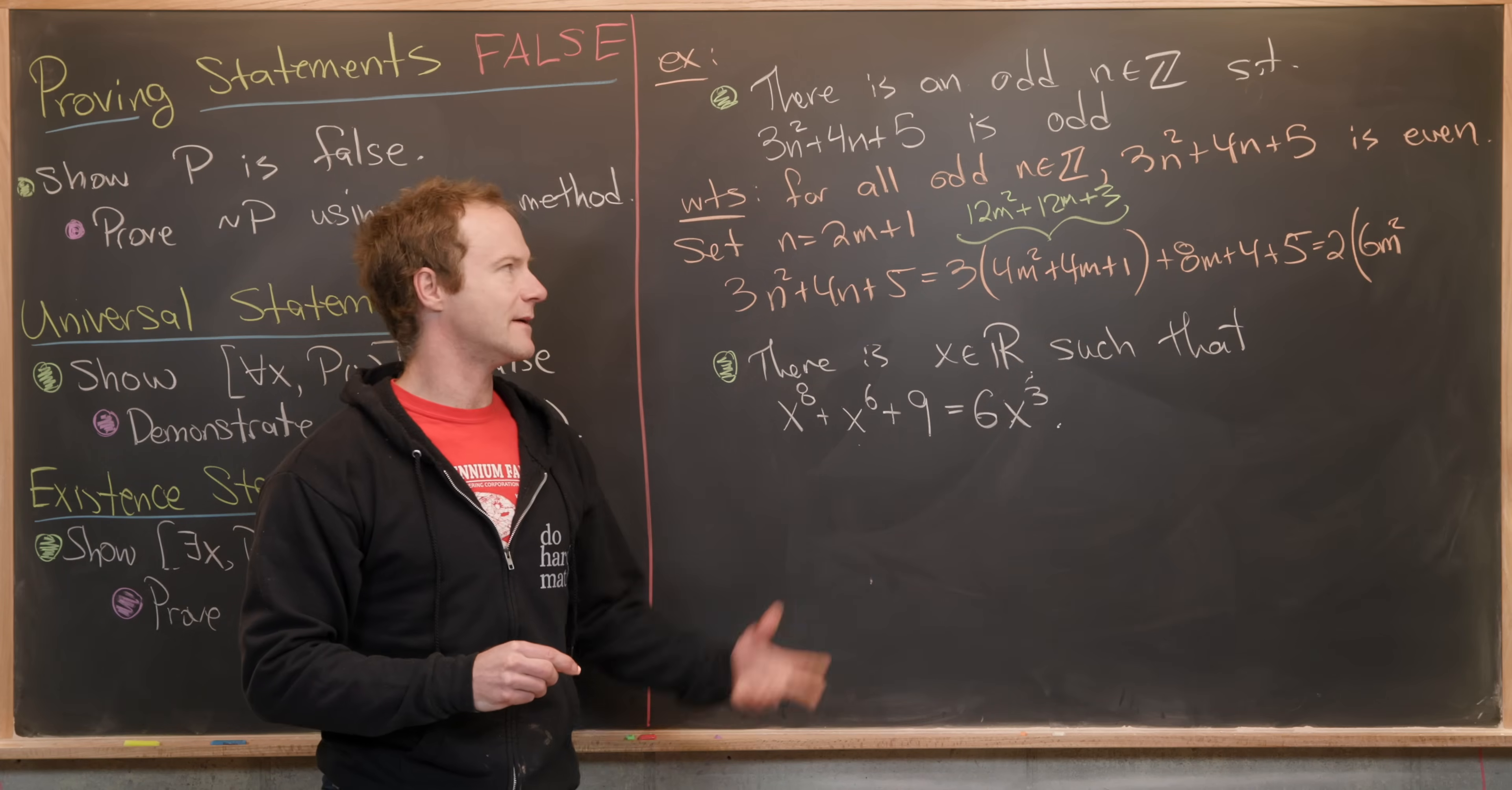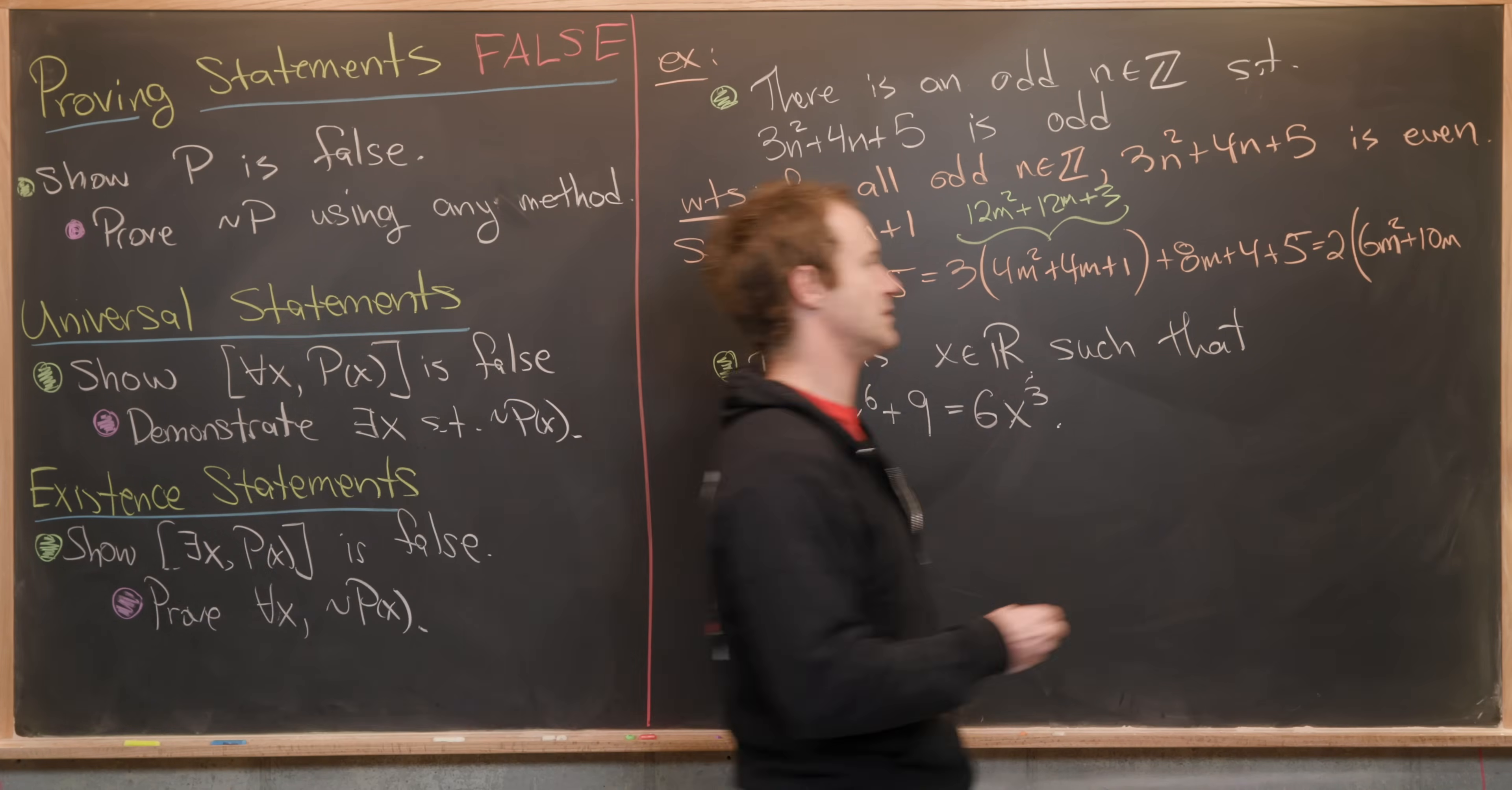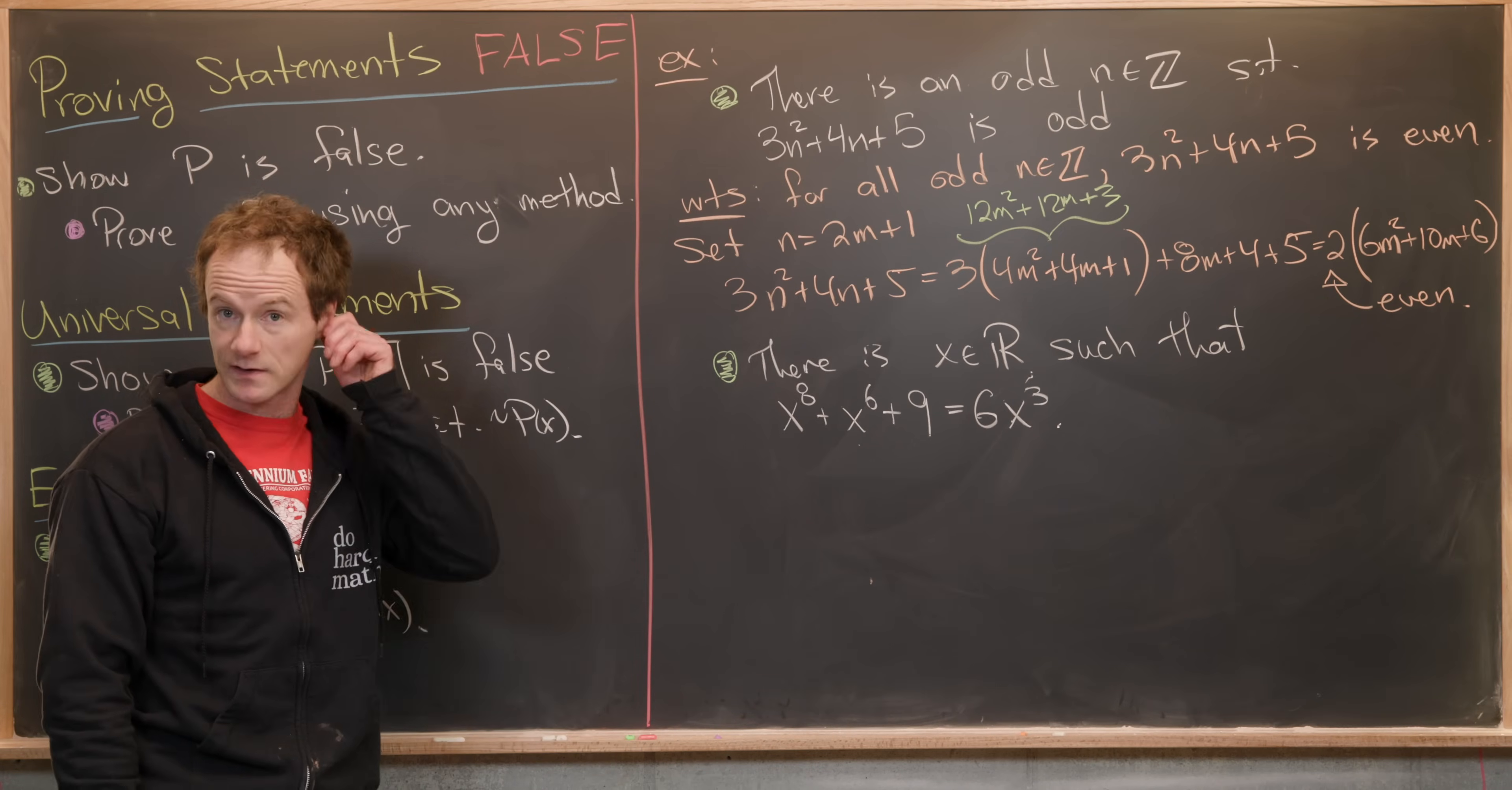Notice that this 3, this 5, and this 4 are going to combine together to give us 12. That means we've got a bunch of even numbers. We can factor a 2 out of them. We're going to have 6N squared, and we've got 12N there, 8N there, that makes 20N. Factor the 2 out, we'll have 10N. Then finally, 3 plus 4 plus 5, again that's 12, so plus 6. Notice that this is even. So we have proven the negation of this statement. We have disproven this existential statement.